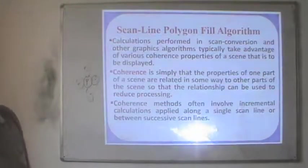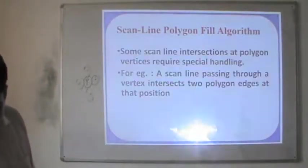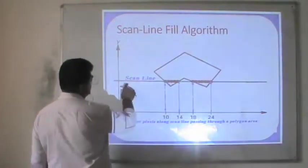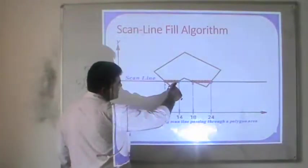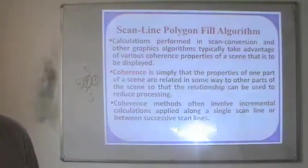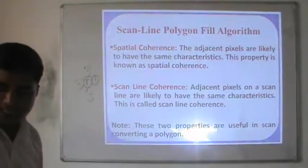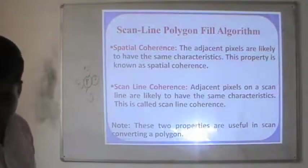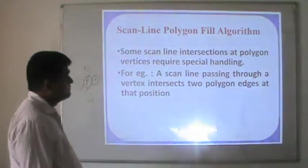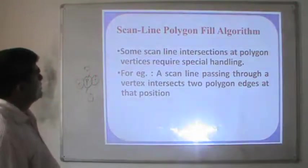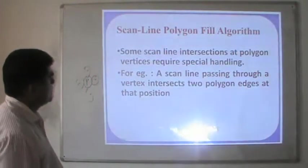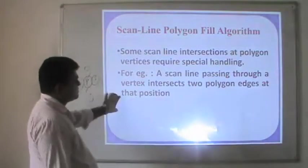Likewise, as we have seen in the last diagram, the points which are lying on the same scanline will have the same characteristics and properties. Some scanline intersections at the polygon vertices require special handling. For example, a scanline passing through the vertex intersects two polygon edges at that position.